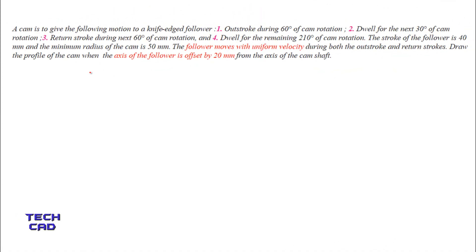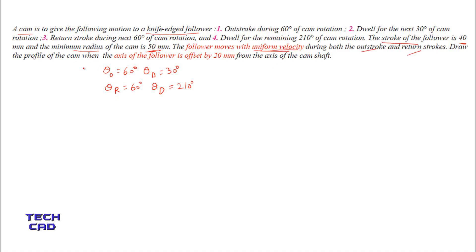In this video we are going to understand how to draw the cam profile when the axis of the follower is offset from the axis of the camshaft. The cam is to give the following motion to the knife edge follower: outstroke angle is 60 degrees, dwell angle is 30 degrees, return angle is 60 degrees, and dwell for the rest of the movement is 210 degrees. Stroke of the follower is 40 mm, minimum radius of the cam is 50 mm, and the follower moves with uniform velocity during both outstroke and return stroke.